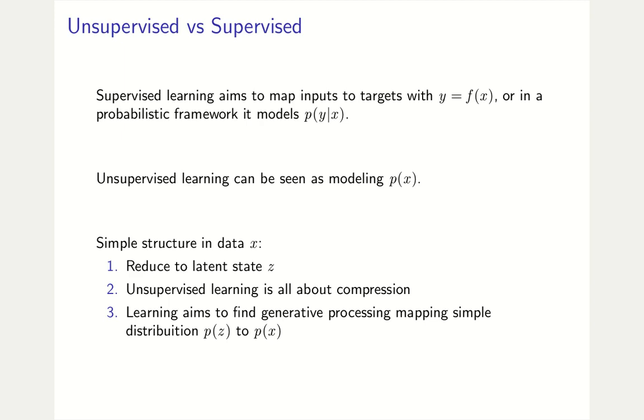But what does this actually mean? Data x can have a very simple structure. And there might be another latent state z for each data point with a simple distribution. This means that we need to define such a simple distribution and then find a mapping between x and z.